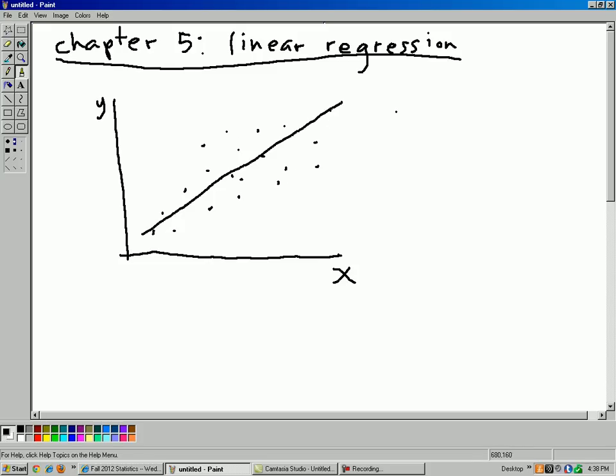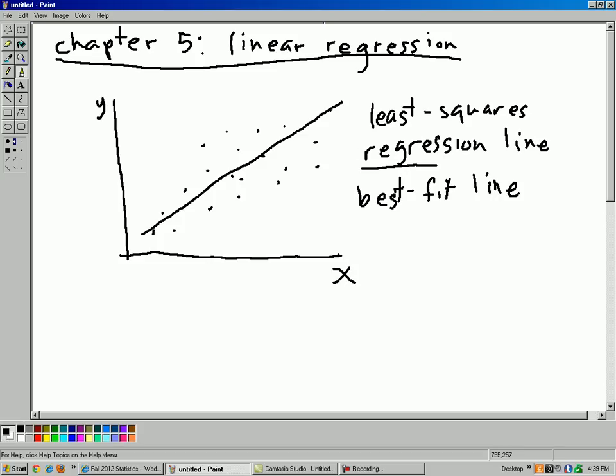That line is called a least squares regression line. That's the full name for it. Often people just say regression line, but I'll use the full term here, least squares regression line. Sometimes it's also known as a best fit line because that's exactly what it is. It's a line that is the best fit of this data.